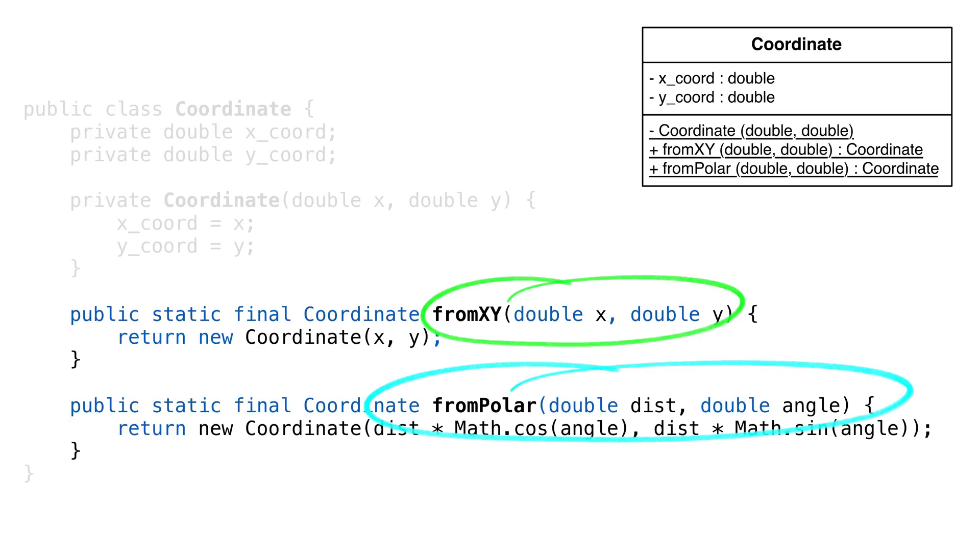We also have two ways to create our instances with the same parameter types. Both methods take two double values, but the meaning of those values are different in each case. If we had constructors, these two instantiations are the same. With static factory methods, it's clear how we're creating each instance and what the parameters mean.